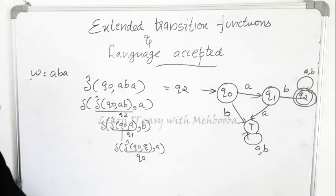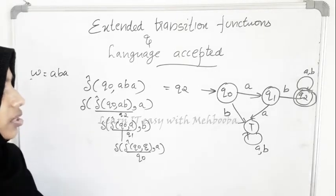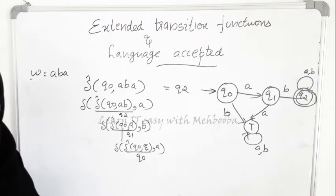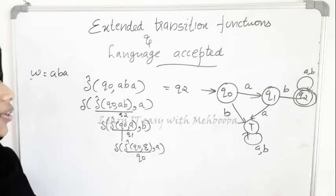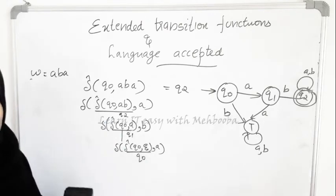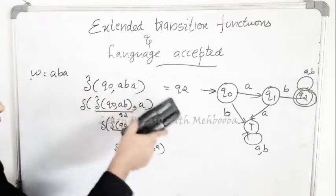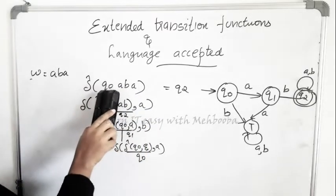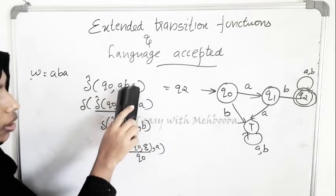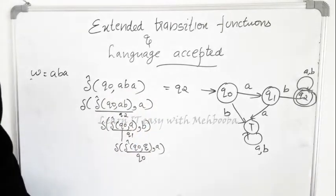Hope this is clear. This is how the extended transition functions work. The difference between extended transition functions and transition functions is that the transition function takes a state and an input symbol, whereas the extended transition function takes a state and a string. You can directly check whether giving input ABA to q0 takes you to the final state.